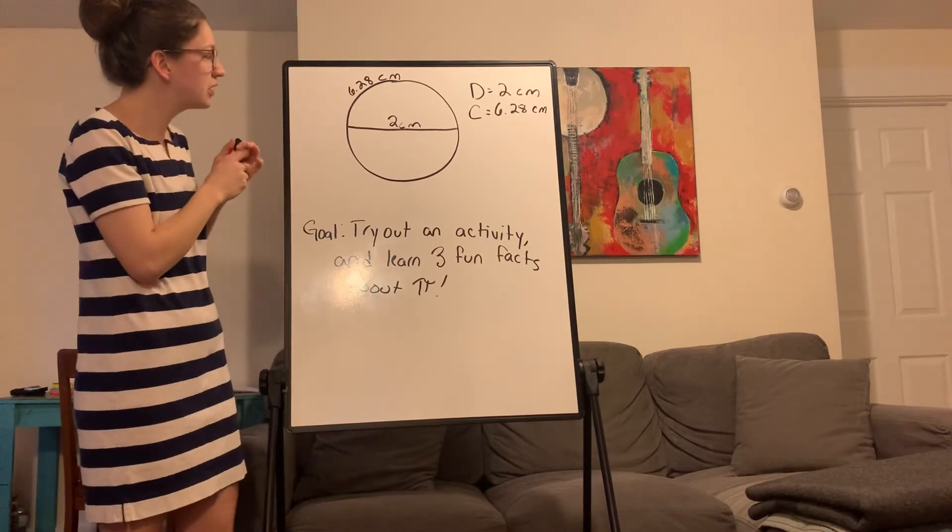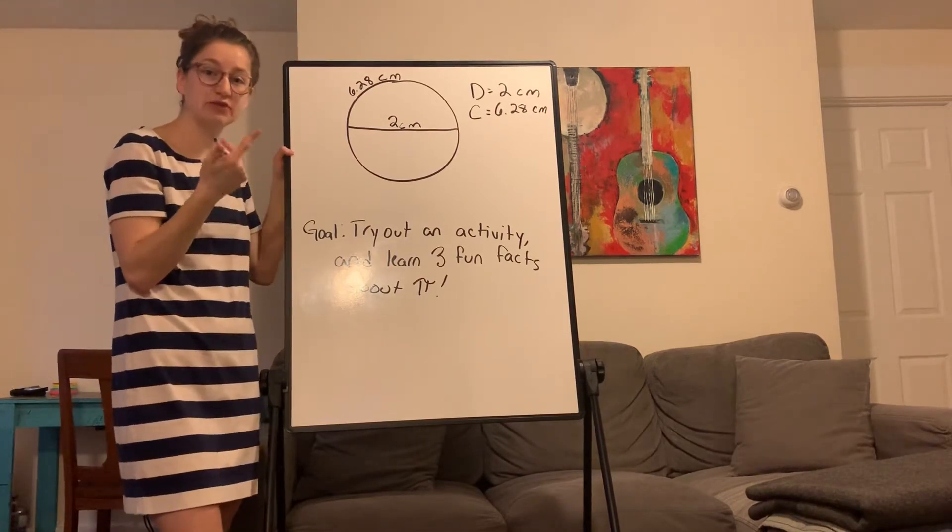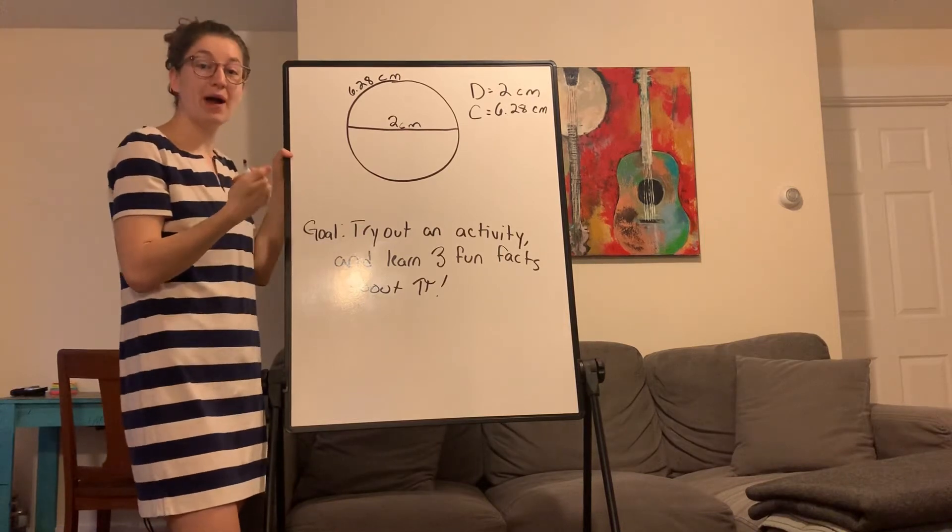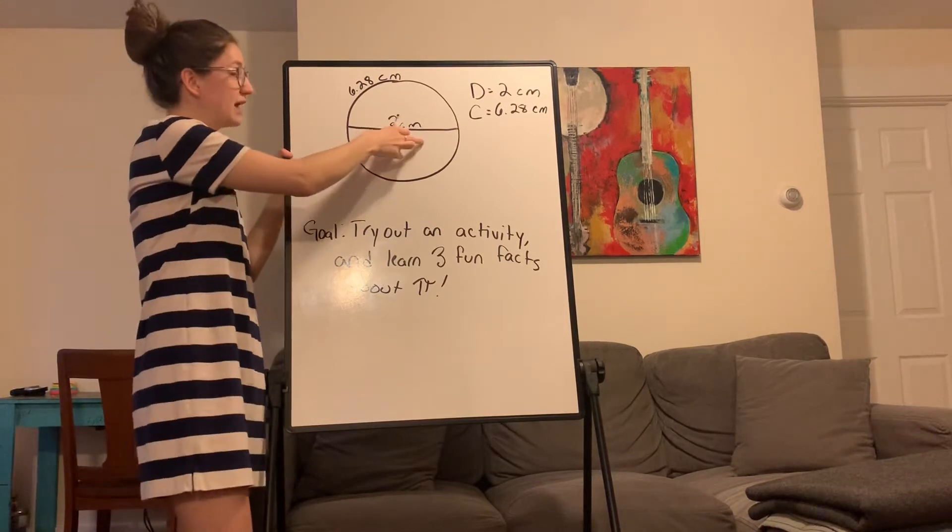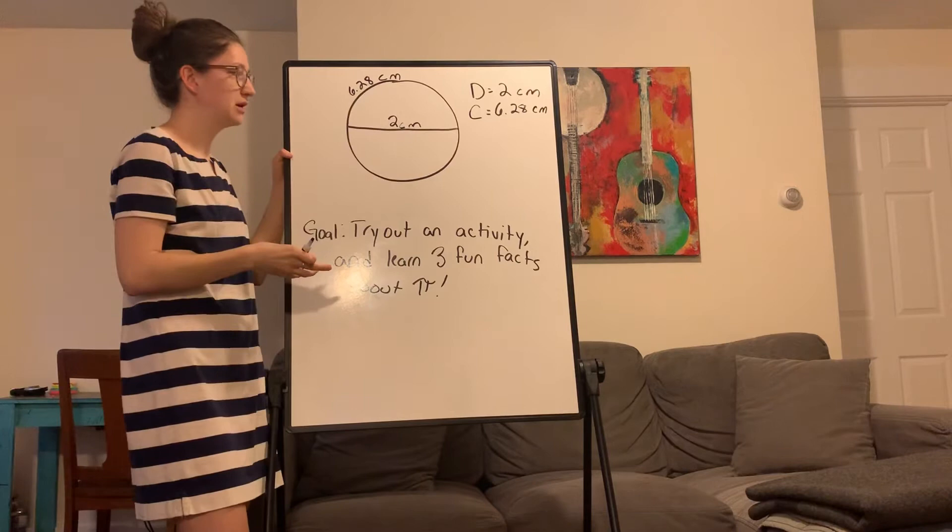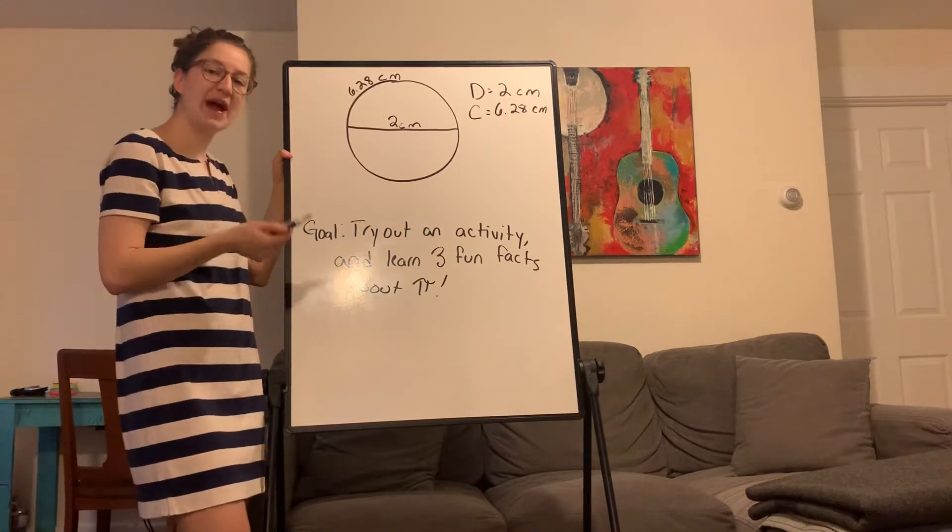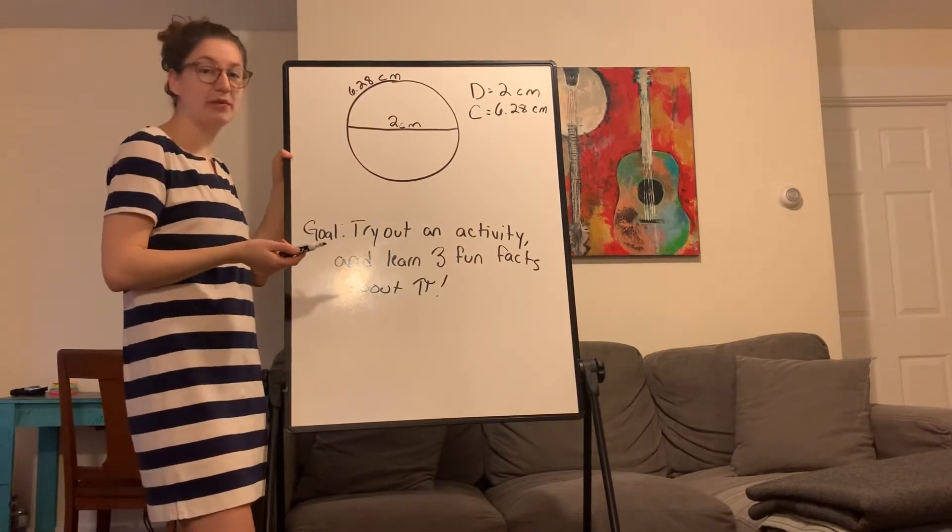Yesterday we learned about the diameter, the circumference, the radius, and the center. Pi concerns the diameter and the circumference, and Pi is how you actually get from the diameter to the circumference.